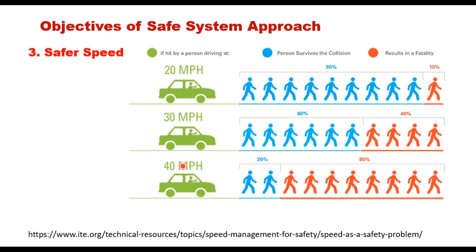The probability of pedestrian survival when hit by a car at different speeds is shown here. When a pedestrian is hit by a car traveling at 20 miles per hour, chances of survival are 90 percent. When hit at 40 miles per hour, chances of death are 80 percent. This illustrates the significant impact of speed on pedestrian survival.